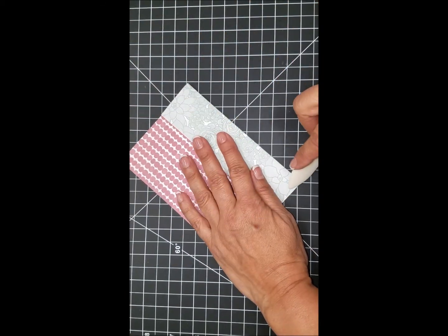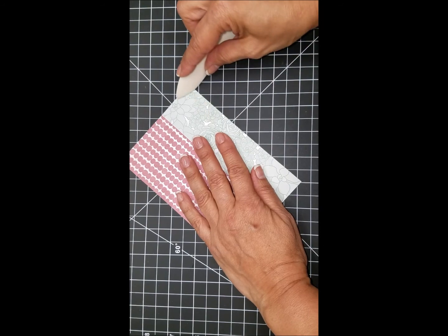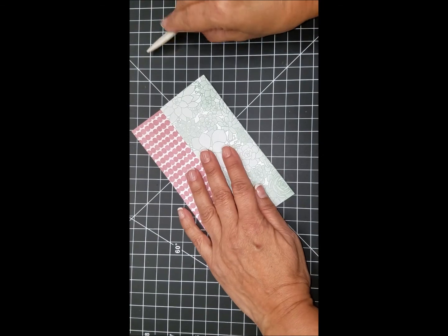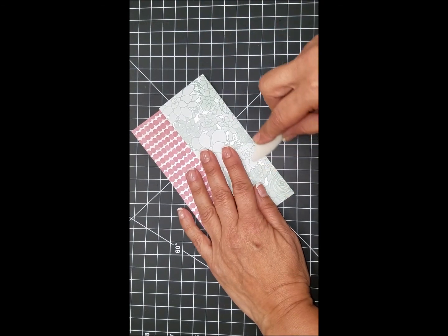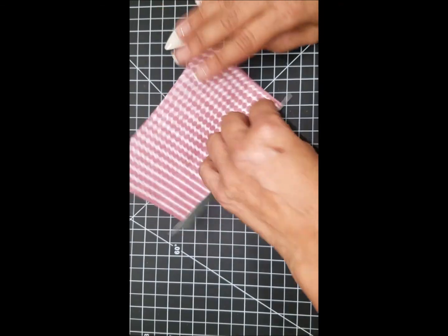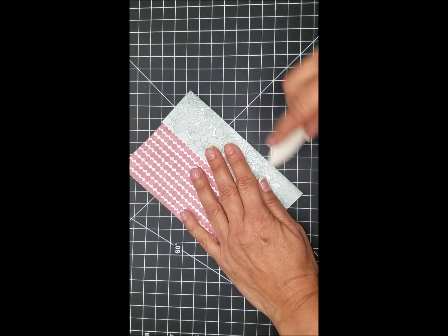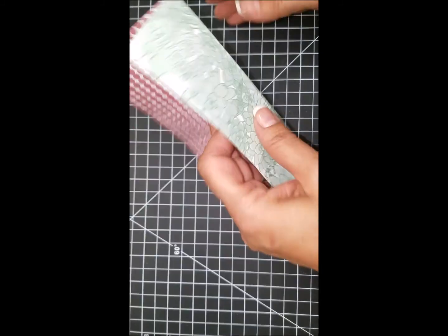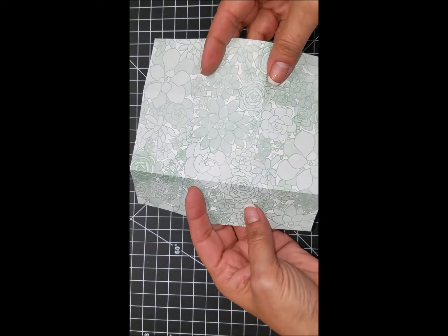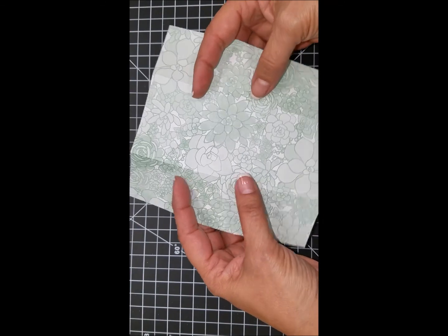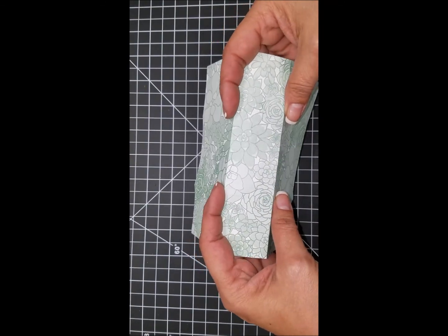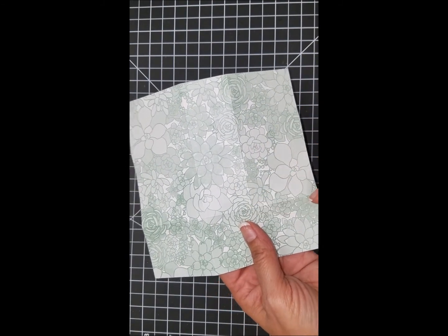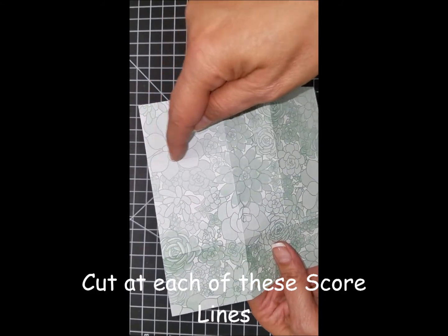Now I'm going to grab my paper snips and I'm going to cut along those long lines. I'm going to make four total cuts: two on the bottom here and here, and two on the top here and here.